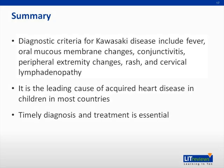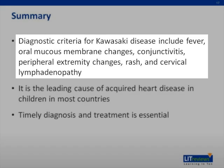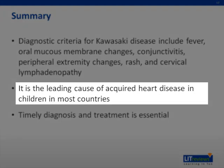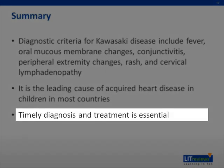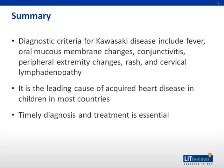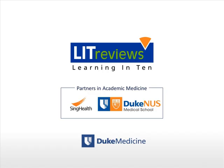In summary, the diagnostic criteria for Kawasaki disease include fever, oral mucous membrane changes, conjunctivitis, peripheral extremity changes, rash, and cervical lymphadenopathy. KD is the leading cause of acquired heart disease in children in most countries and long-term morbidity depends on the severity of coronary artery involvement, underscoring the importance of timely diagnosis and institution of treatment.